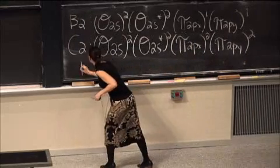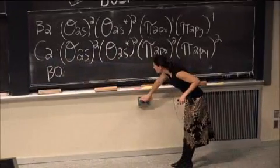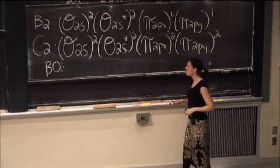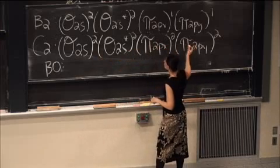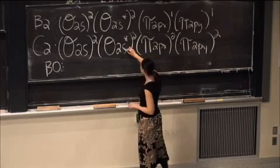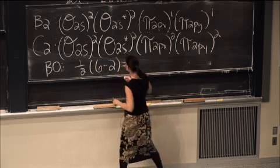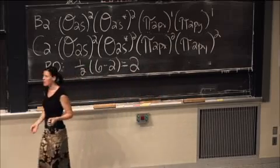So let's talk about what the bonding order is going to be for C2. So what's the bonding order for C2? Two. Okay, so we have 2, 4, 6, minus 2, so we have one half of 6 minus 2, so that's one half of 4, so we have a bonding order of 2 for carbon 2.